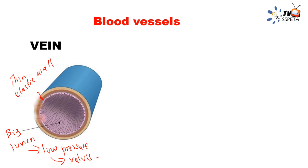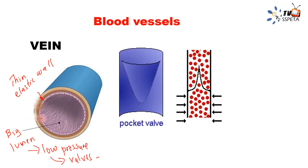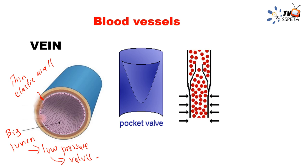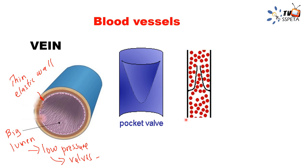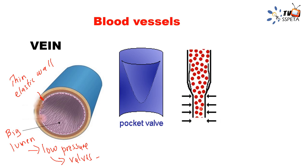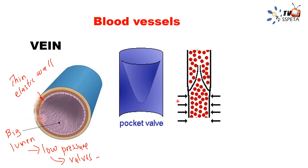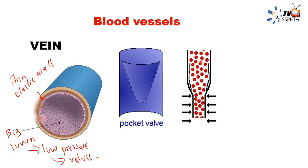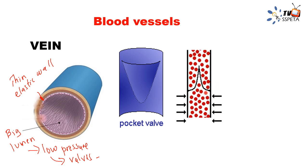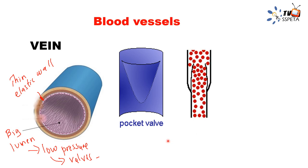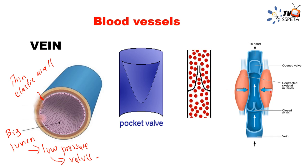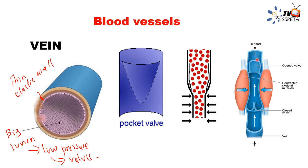Here you can see a pocket valve. Blood travels through the vein, and pressure is applied by the contraction of muscles. When muscles contract, they move blood upwards. The valves prevent the backflow of blood — you can see the muscles squeeze the vein, moving blood upwards, and the valve closes, preventing backflow.